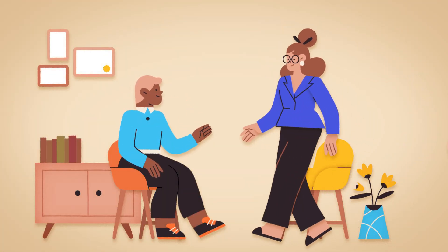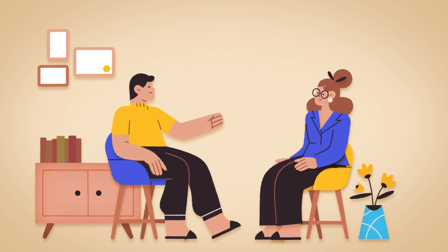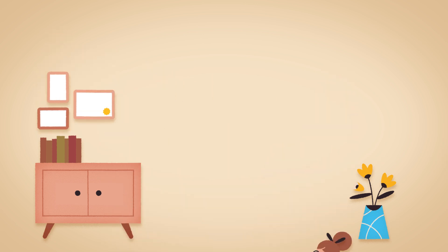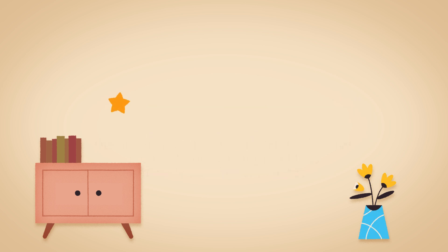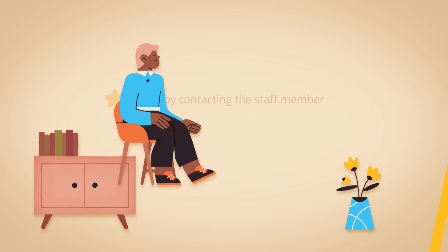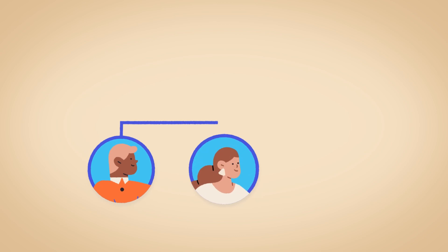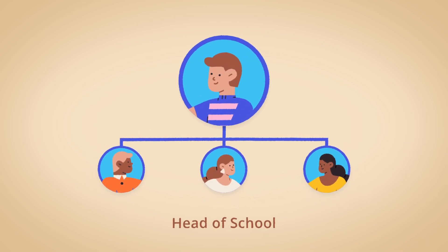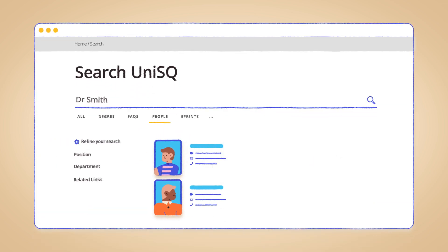In many cases, problems can be resolved just by talking with the person most directly connected to the issue. This might be your lecturer, course examiner or a professional staff member. Although it's an optional step, Informal Resolution is often the quickest way to address misunderstandings or mistakes. Start by contacting the staff member — you might arrange an in-person meeting or connect by phone, email or Zoom. If you feel uncomfortable approaching them directly, you can speak with their supervisor, like a head of school or a section manager. You can find all their contact information on the UniSQ website.